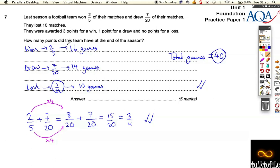Then the last thing we've got to do is work out how many points they got. Now they get 3 points for a win, so that gives them 48 points for that. They get 1 point for a draw, which gives them 14 points, and they get 0 points for a loss.